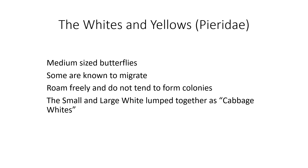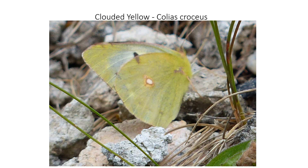Moving on to the whites, or Pierridae — all medium-sized butterflies. We get big influxes of these from the continent in summer. The clouded yellow is a migrant, not often seen — we had one in Buxton about five or six years ago. It's always one to look out for; it looks a bit like a brimstone, but we'll see the differences in a minute.